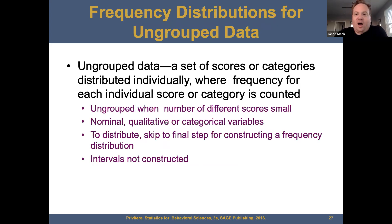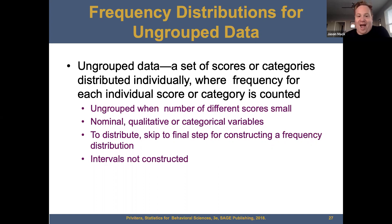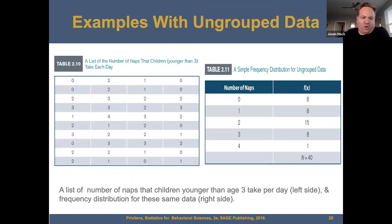Frequency distributions for ungrouped data. Ungrouped data is a set of scores or categories distributed individually, where the frequency for each individual score or category is counted. Ungrouped data is used when the number of different scores is small — usually nominal, qualitative, or categorical variables. Intervals are not constructed in this case. An example of ungrouped data: a list of the number of naps children younger than three take per day, with the frequency distribution of these data listed on the right side.